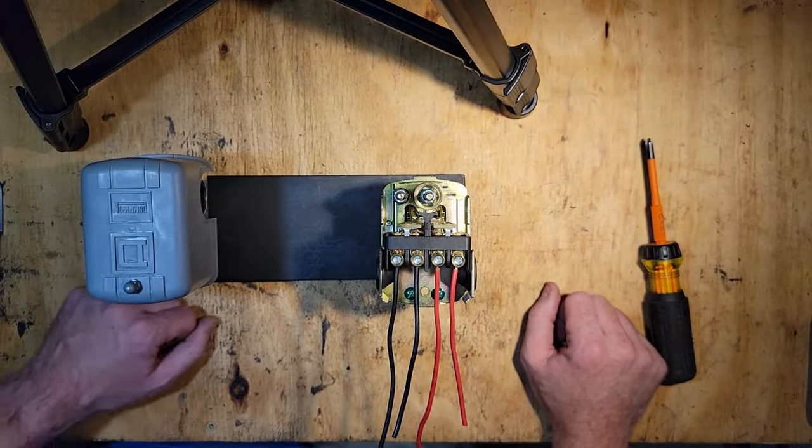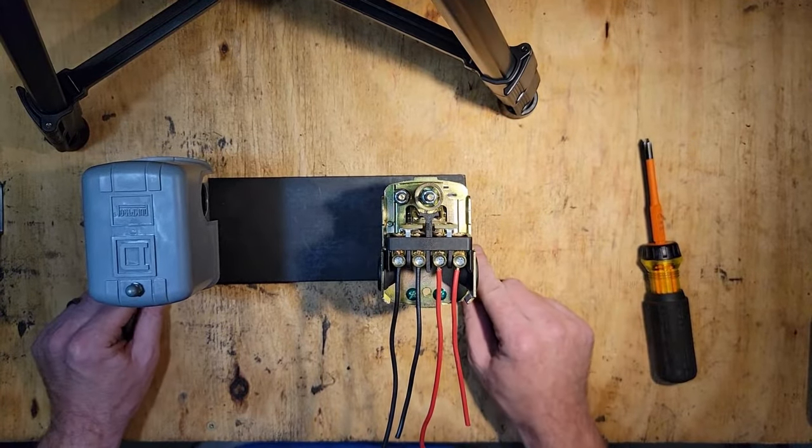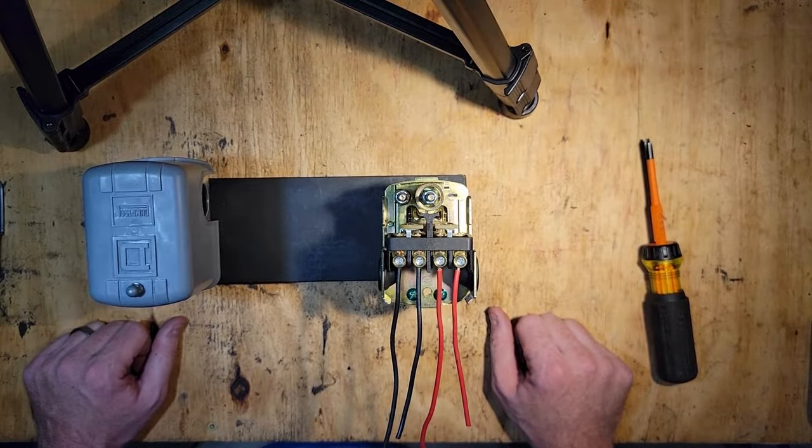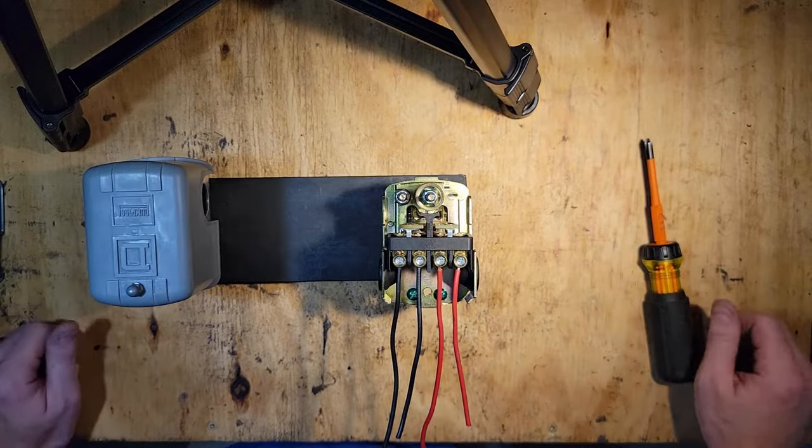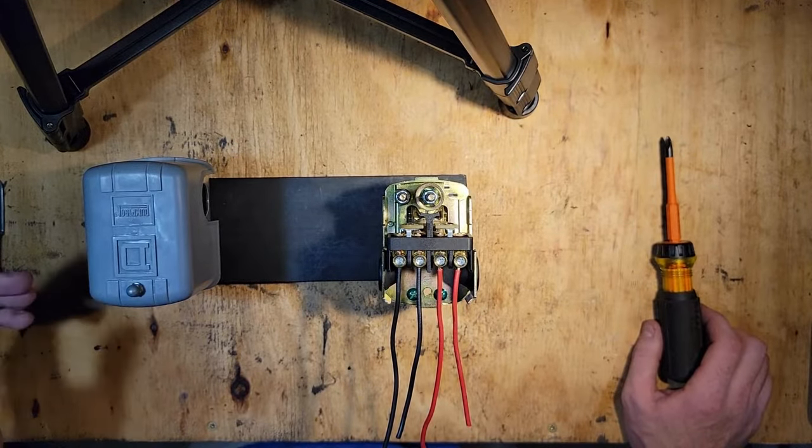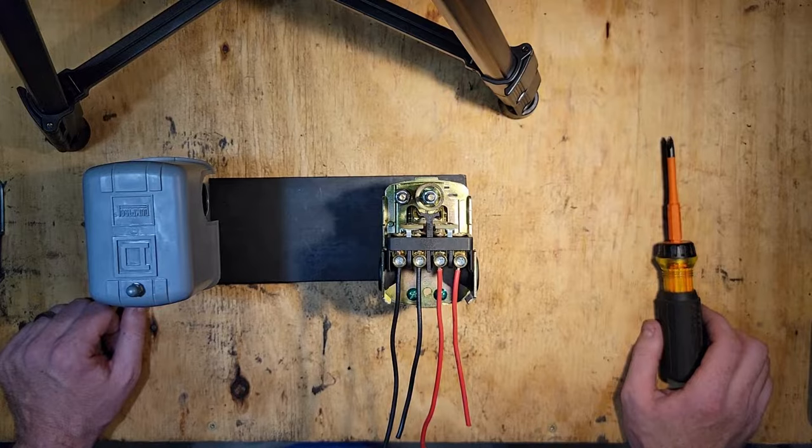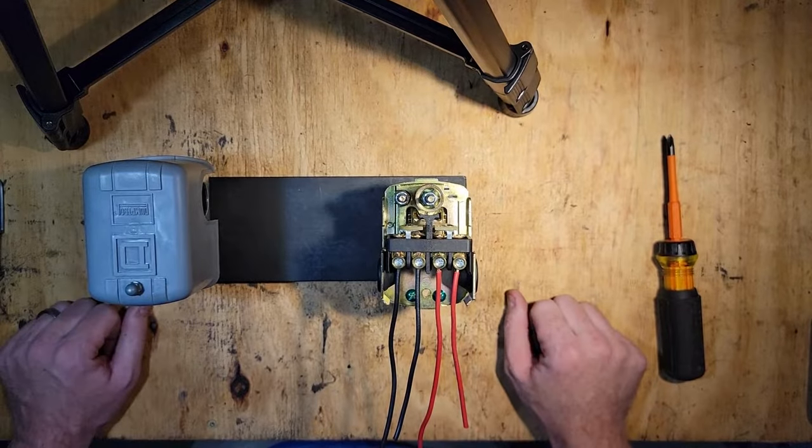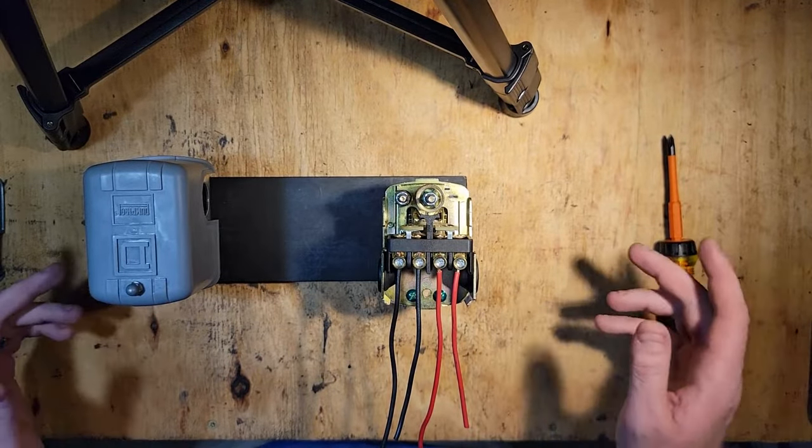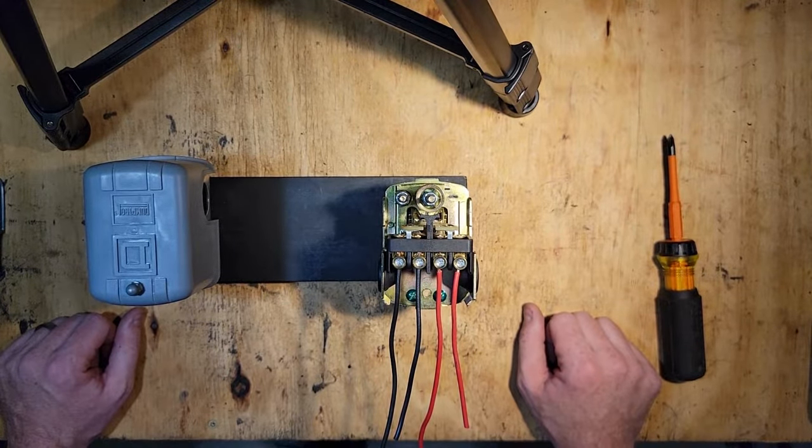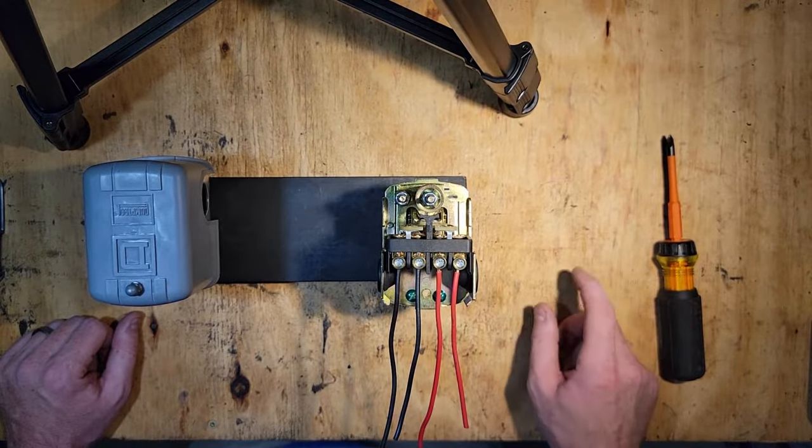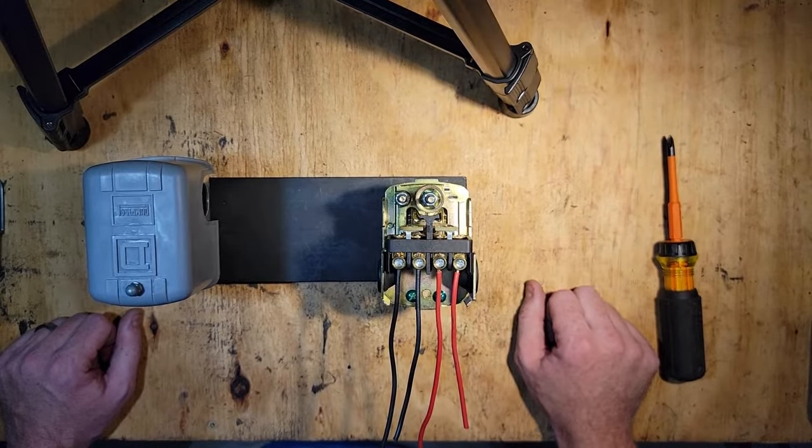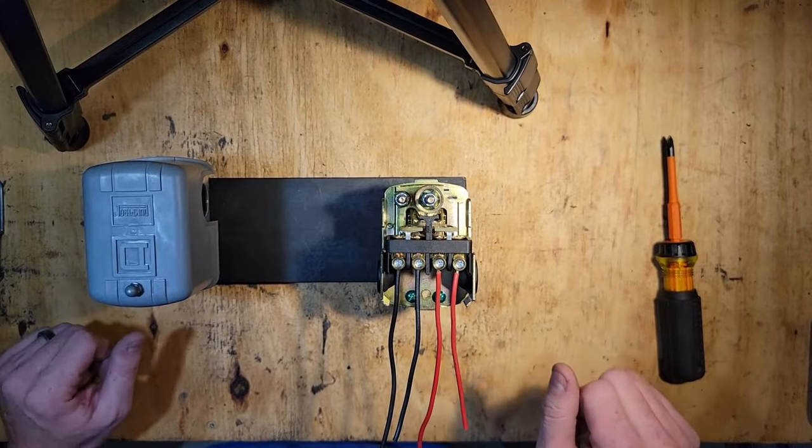Your smaller control boxes, your half horsepower, three-quarter horsepower, one horsepower, are pretty much usually standard boxes and don't have the option. The middle ones, your horse and a half and two horsepower boxes, can be either or. But it's pretty simple to check. You can just take the cover off your box and you should have an SW terminal on that main strip if yours is a deluxe box.